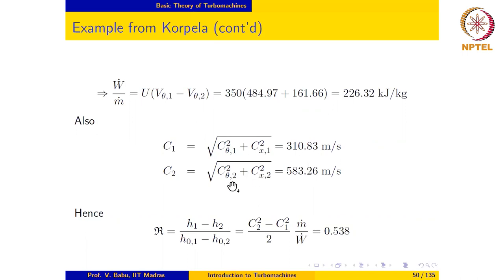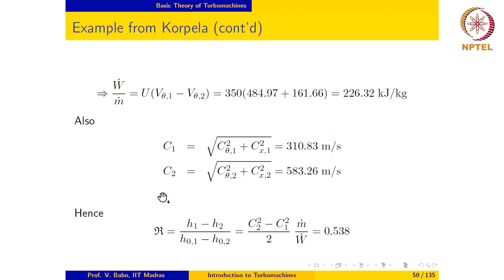Using the Pythagorean theorem we can calculate c1 from its tangential and axial components. The degree of reaction is defined as (h1 minus h2) divided by (h01 minus h02), where the denominator equals the specific power output. The numerator is evaluated as (c2 squared minus c1 squared) over 2, since h plus c squared over 2 is constant for an axial machine. Substituting the numbers gives the degree of reaction as 0.538.